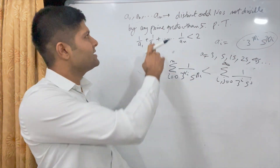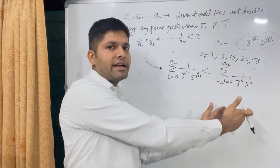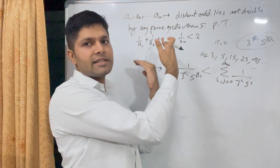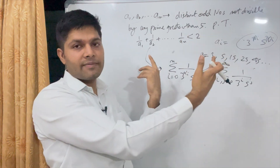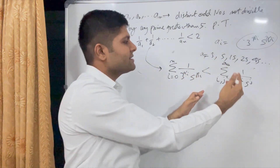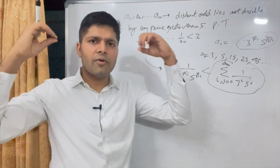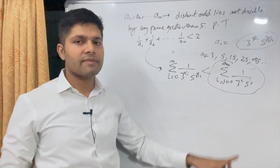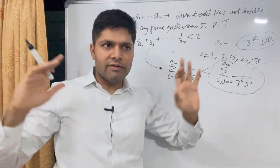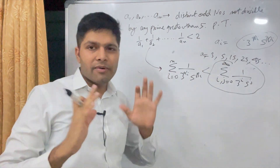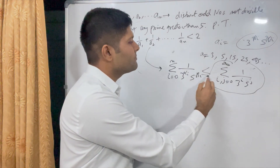Since the given numbers are a subset of all such numbers, the sum of reciprocals of these n numbers will always be less than or equal to the sum of reciprocals of all possible numbers of this format. The summation of all numbers of a particular set will always be greater than or equal to the summation of some of the numbers of the set.